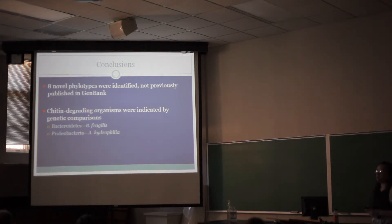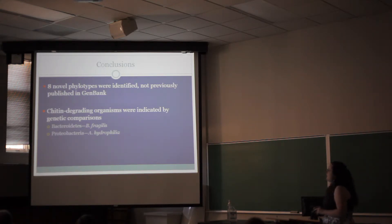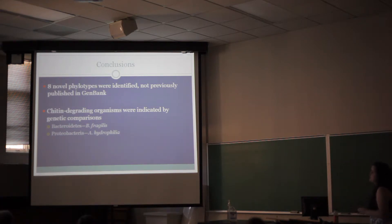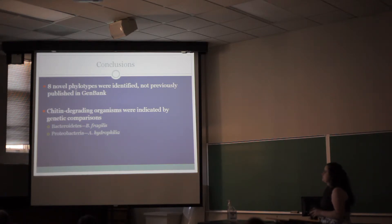These novel phylogenotypes were not previously published in the database, and they have been accepted for publication. Highly diverging organisms were indicated by phylogenetic comparisons, and this included sequences that were relatively close to Bacteroides fragilis and Caromonas-type phylogenies.